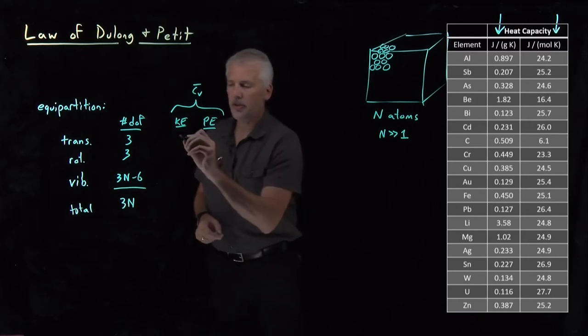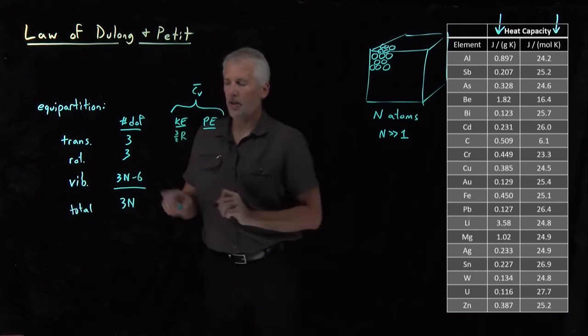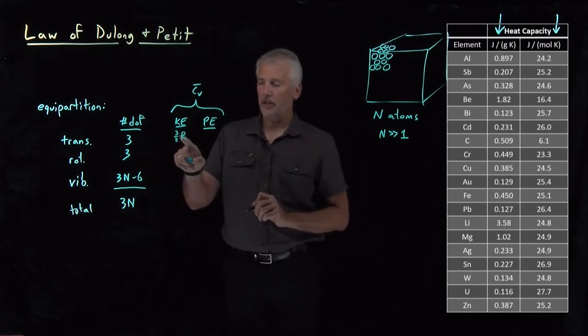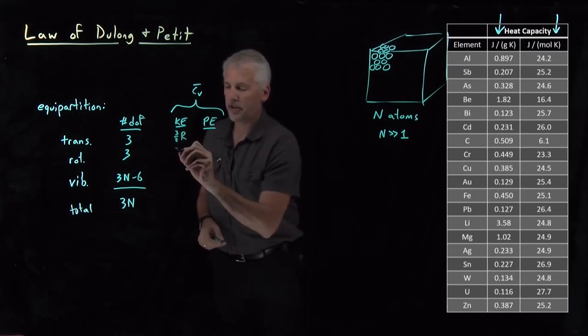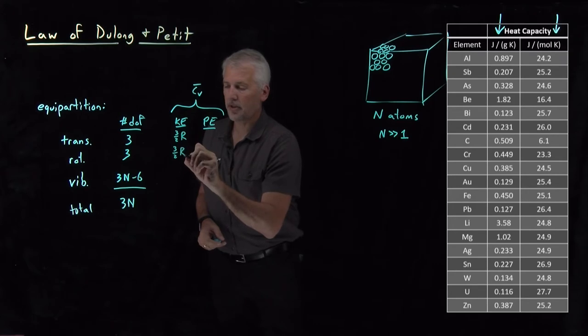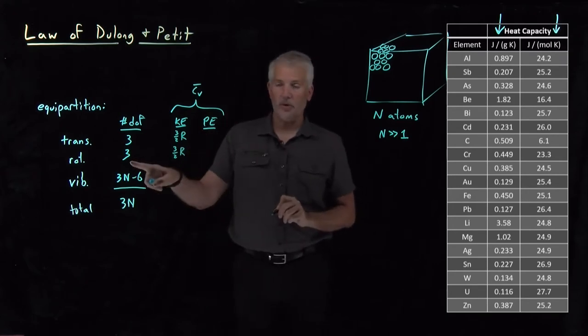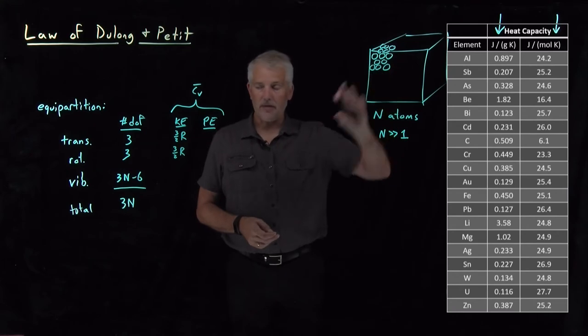Kinetic energies always contribute quadratically, so three halves R from the translational energy, the kinetic energy of translation. Three halves R from the kinetic energy of rotation. That would be the rotation of this entire block of metal.